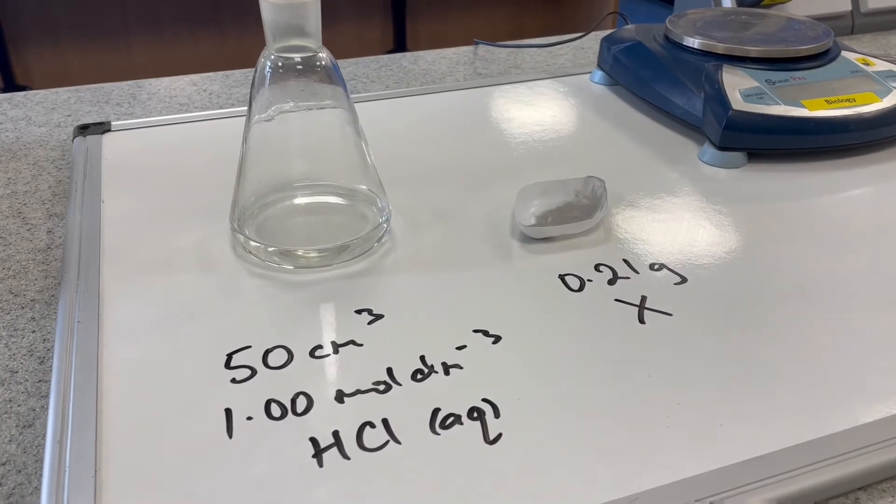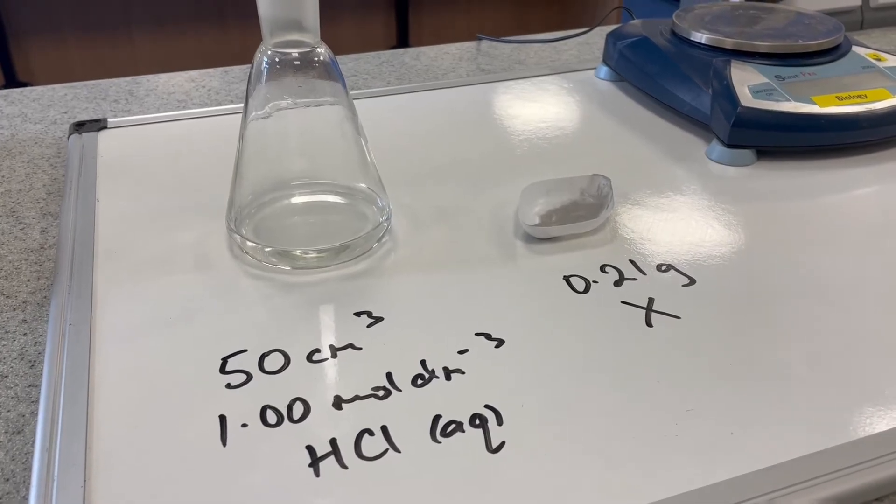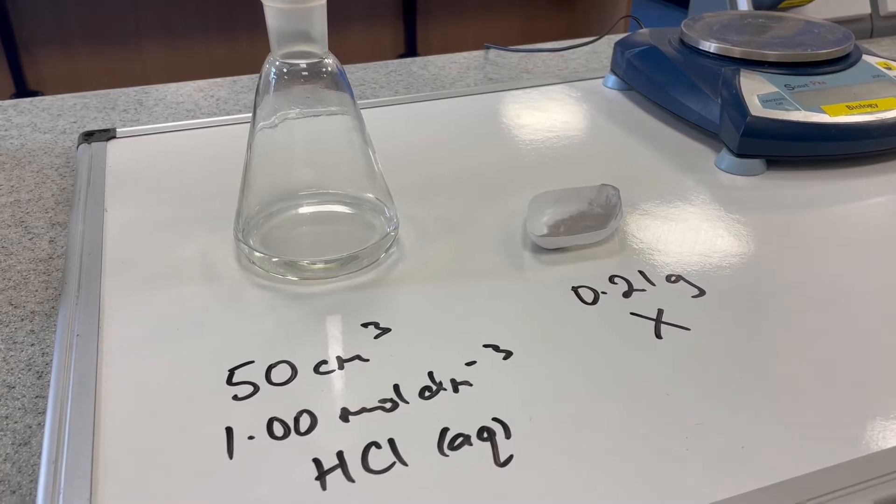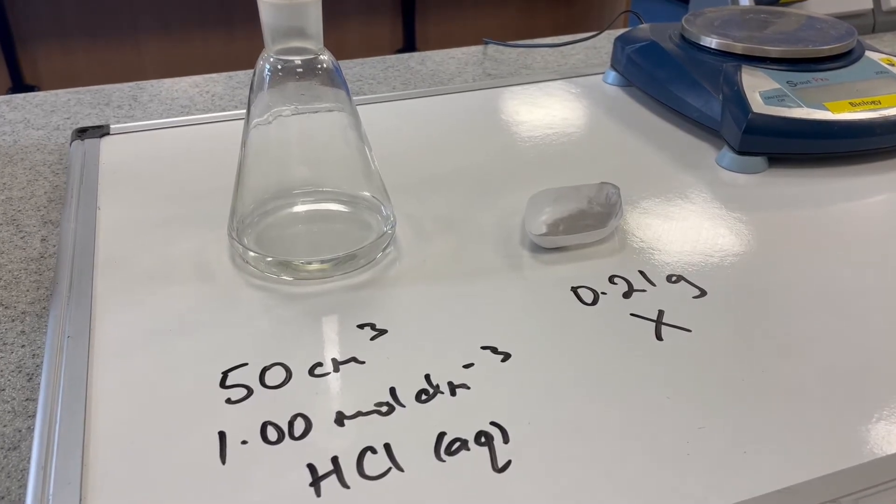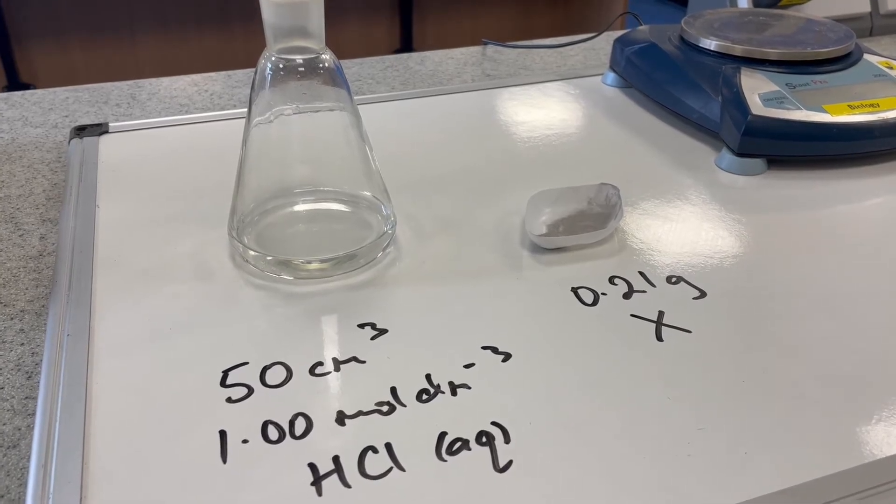I've just measured out 50 cm³ of 1 mole per dm³ hydrochloric acid. Remember that's an excess of the acid. In the plastic weigh boat there I've got 0.21 grams of the metal X.